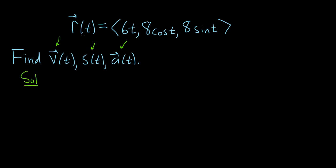So to find the velocity, you just take the derivative of our position vector function here. So r prime of t. And to differentiate this, you just differentiate each component. So the derivative of 6t is 6. The derivative of cosine is negative sine. So this will become negative 8 sine t. And here the derivative of sine is cosine.